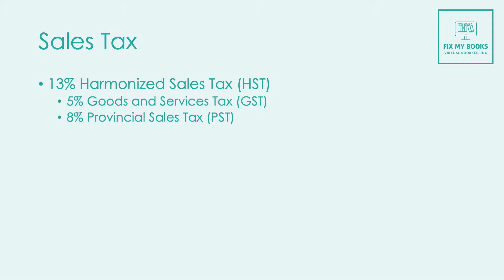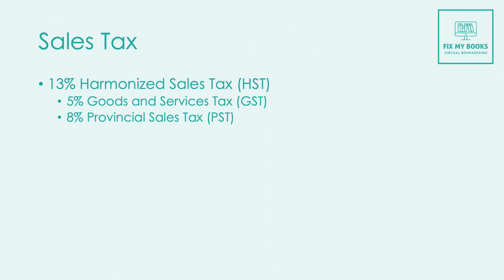The sales tax is called HST, or Harmonized Sales Tax. It's 13% and is made up of two different types of taxes: the Goods and Services Tax (GST), which is 5% that goes to the federal government, and the PST for Ontario, which is the Provincial Sales Tax at 8%.